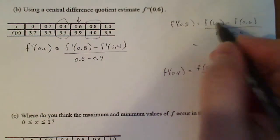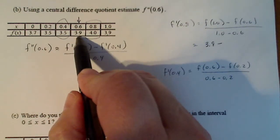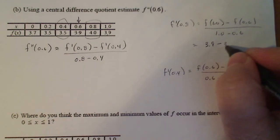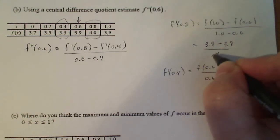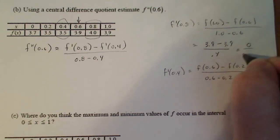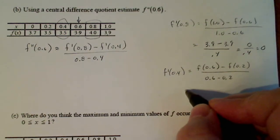So that's going to be 3.9 minus 3.9, all divided by 0.4, which gives me 0 over 0.4.